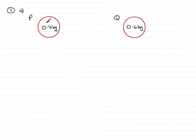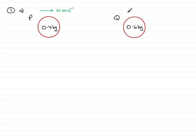In Question 1, Part A, we're given two particles P and Q with masses of 0.4 kg and 0.6 kg respectively. Originally, the two particles were stationary, so on my diagram I'm going to put an arrow showing that each was moving at 0 m per second.